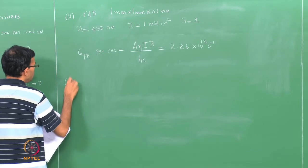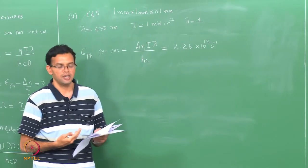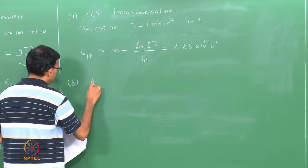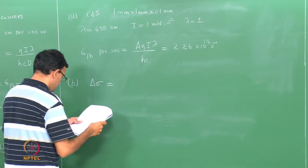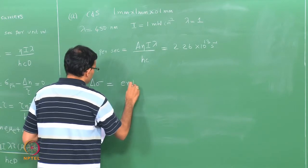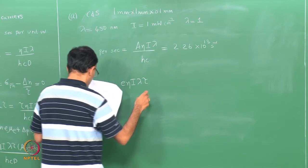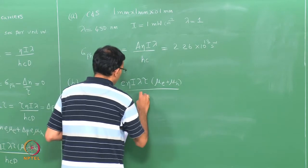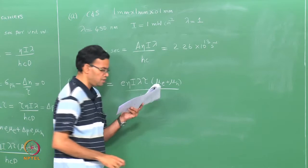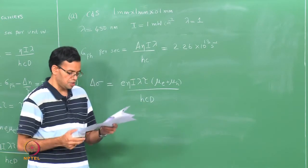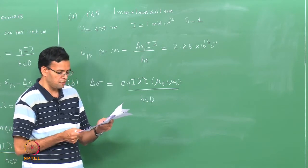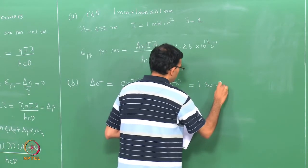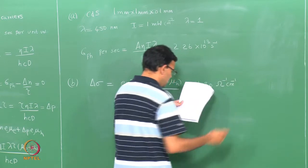Dividing by the volume gives electron-hole pairs per unit volume. In part (b) we calculate the photo-conductivity: Δσ = eηI(λ)τ(μ_e + μ_h) / (hcd). All values including μ_e and μ_h are given, and Δσ works out to be 1.30 Ω⁻¹cm⁻¹.